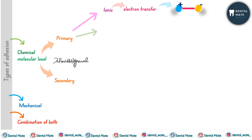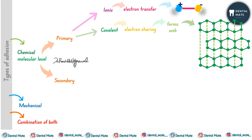The second type of primary chemical adhesion is the covalent bond, formed by the sharing of electrons between two atoms with no direct electron transfer, resulting in a web-like structure — for example, diamond or graphite. The third type is the metallic bond, where a charged metal atom moves freely in an ocean of electrons.